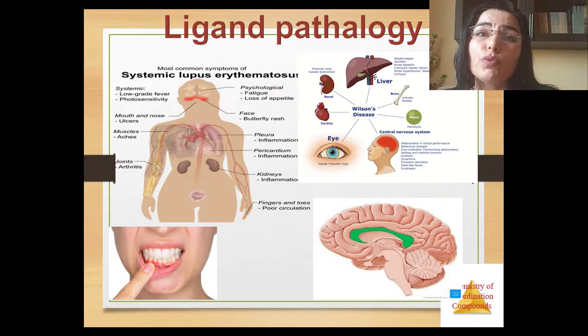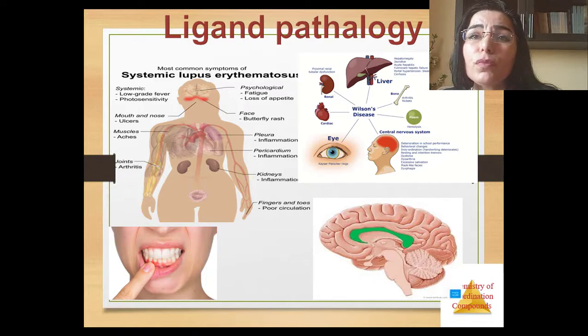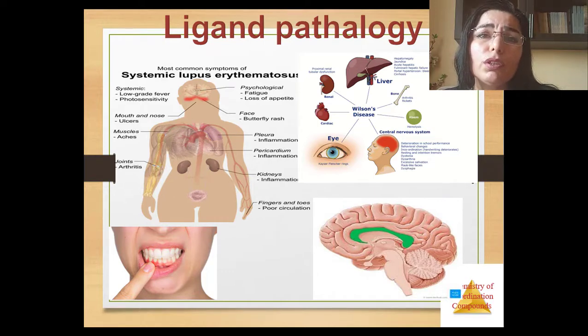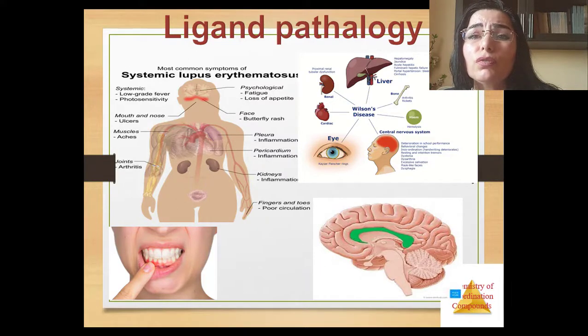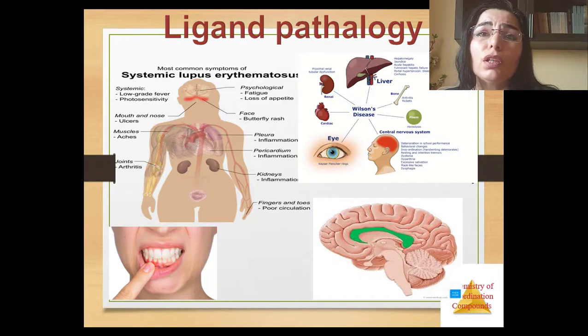Without sufficient amount of copper as a result of its blockade, lysyl oxidase produces defective collagen that causes the above mentioned diseases. You see here the most common symptoms of systemic lupus erythematosus: low grade fever, photosensitivity, dermatological symptoms like butterfly rash, muscle aches, joints arthritis, kidneys inflammation, fingers and toes poor circulation, etc. And here you see Wilson's disease structure and periodontosis.